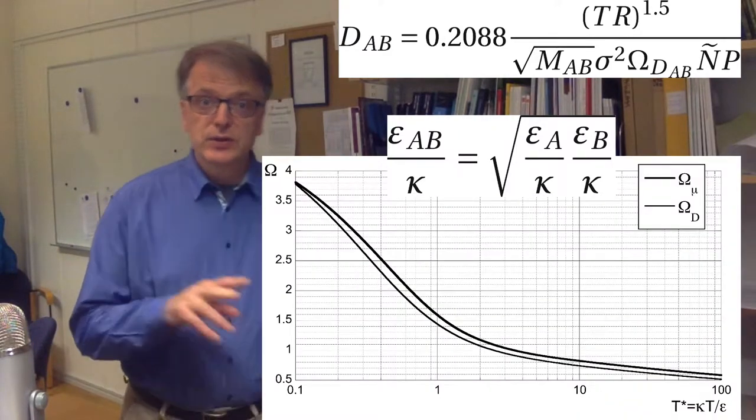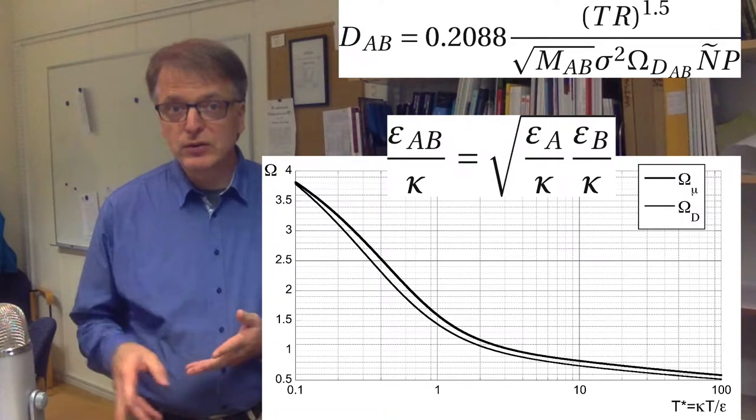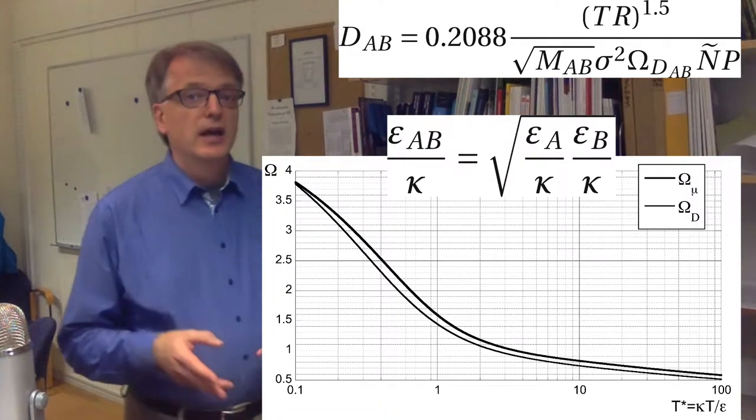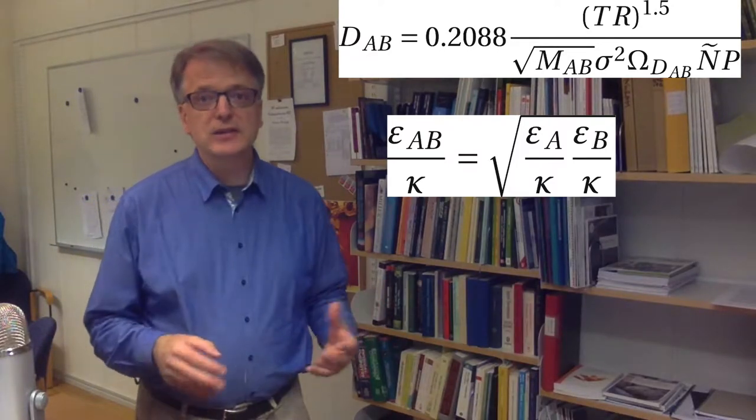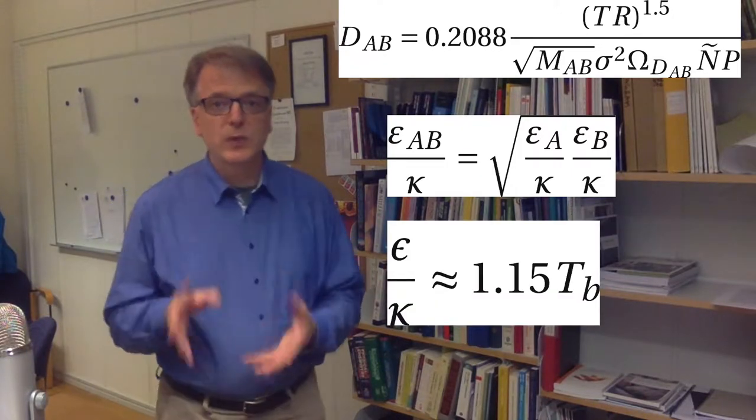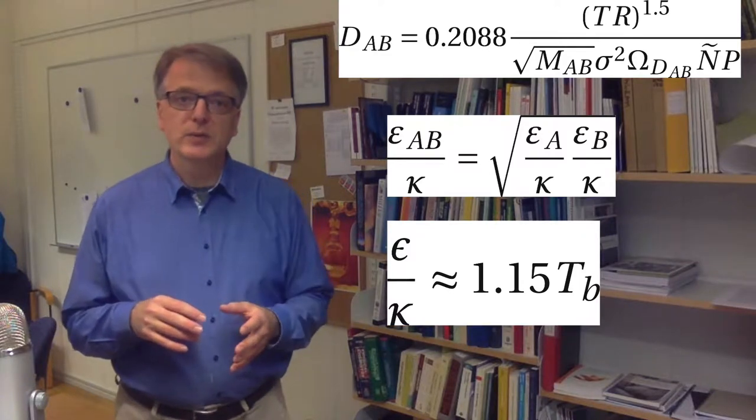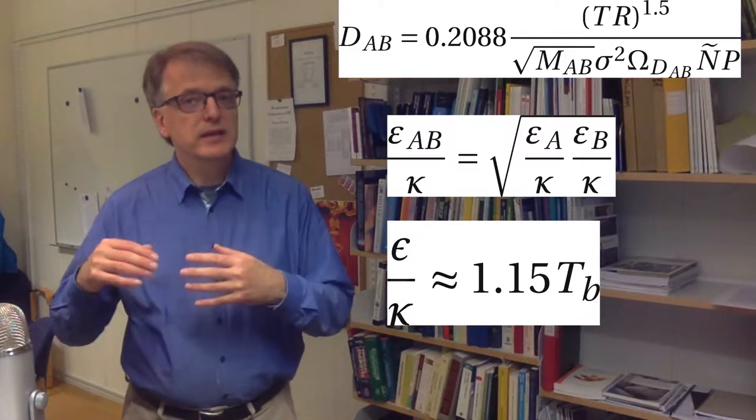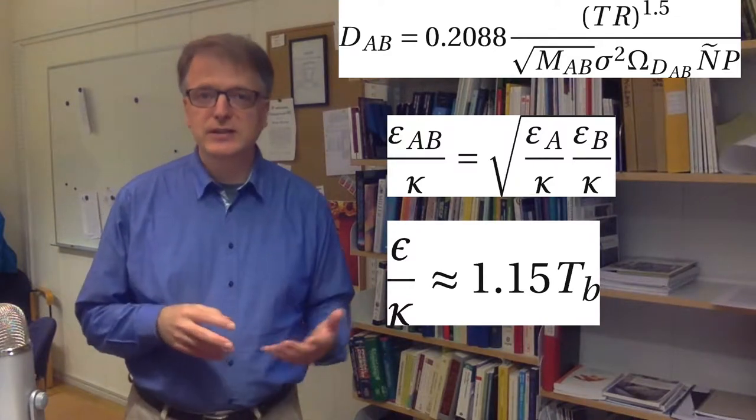You need the characteristic energy to get to this correction factor, omega. And if you don't have the characteristic energy, the characteristic energy is somehow related to the boiling point. So if you take the boiling point at one atmosphere in Kelvin and then multiply that with 1.15, you get usually a reasonable estimate of what the characteristic energy is.